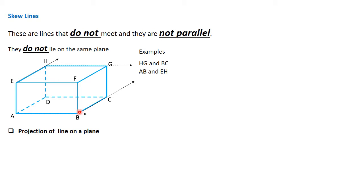Now, a projection of a line on a plane. This really represents the shadow of a line on a given plane. The shadow of a line on a given plane is normally the projection of that line on the plane. So how is the line projected on the plane? It's its shadow on the plane.